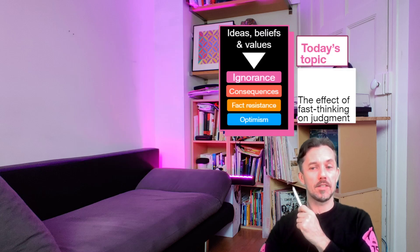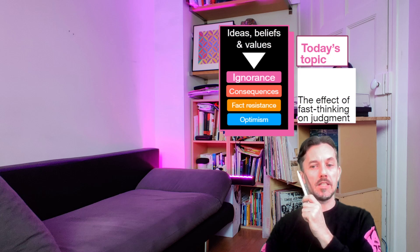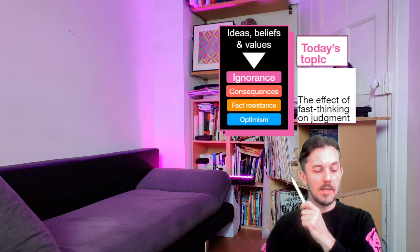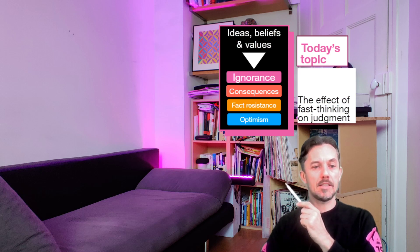Now we're going to look at these four elements: ignorance, consequences, factor resistance, and optimism. This is going to cover MCQs three through to ten.